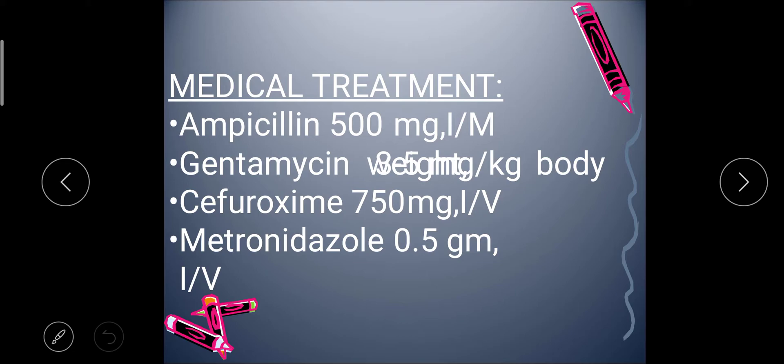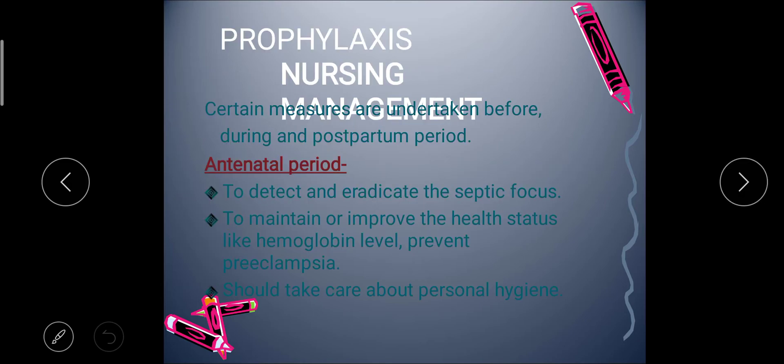For medical treatment, the first option is antibiotics — obviously if there is infection you have to start antibiotics. These include penicillin 500 mg IM, gentamicin 3.5 mg per kg body weight, cefuroxime 750 mg IV, and metronidazole 0.5 gram IV. This is the medical treatment for puerperal sepsis.